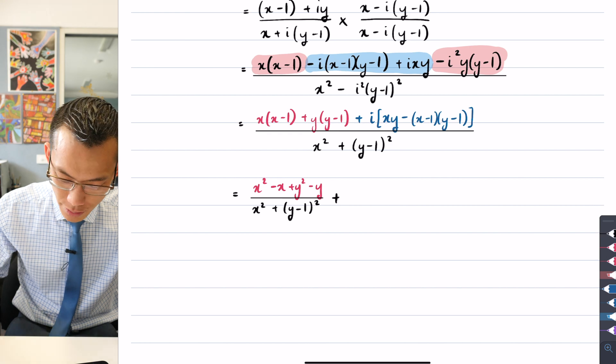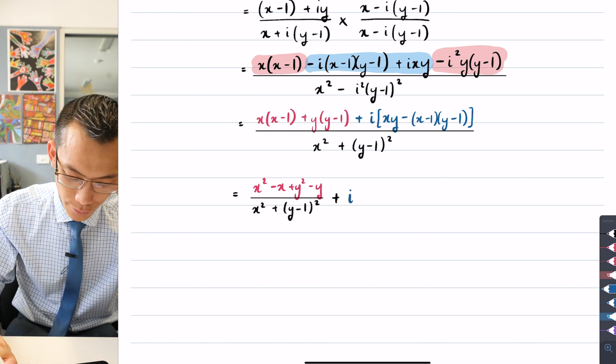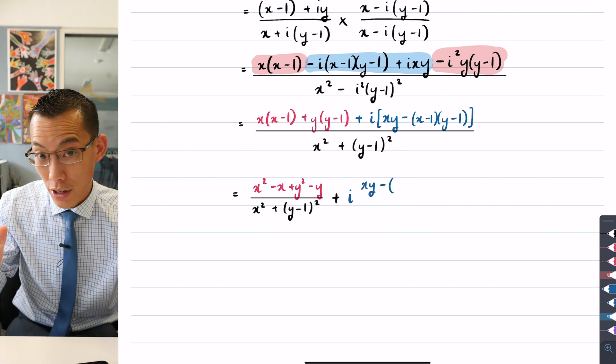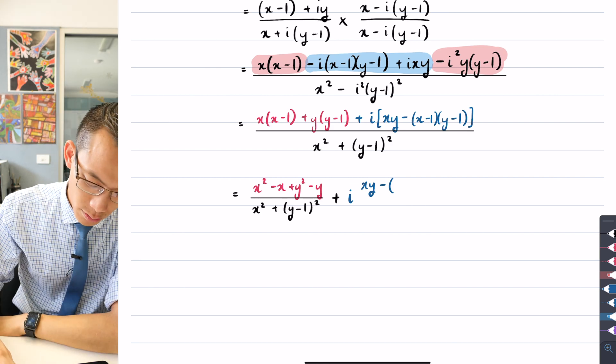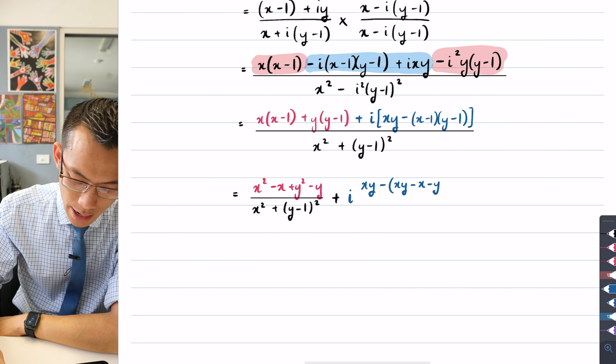And then what do I get here? Well, I'm going to factorize out the i. What do I get on the numerator? Let's look at this carefully. So I've got the xy hanging out the front there, and then I'm going to subtract.